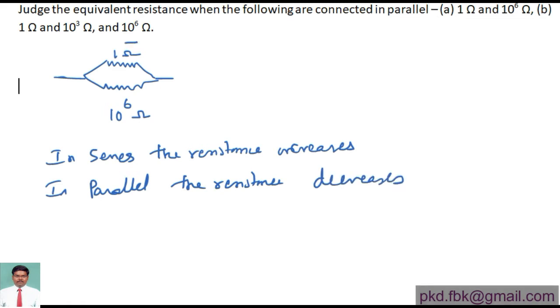This is the least value. If you find the equivalent resistance of this combination, it should be less than 1Ω. So let me find for the two resistances: 1/Rp = 1/R1 + 1/R2. Here R1, R2: 1/1 + 1/10^6.